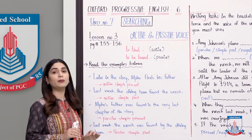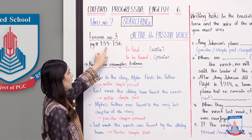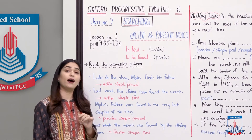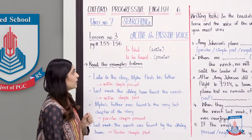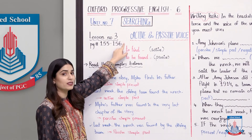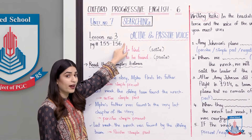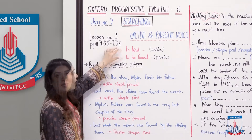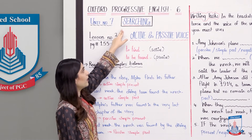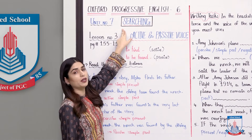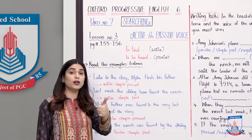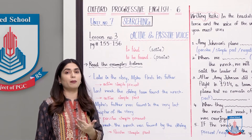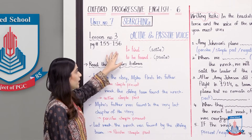Today, lesson number 3 covers pages 155 to 156. These two pages are the same content. Our topic is active and passive voice. We will look at, search, find, and investigate these verbs, and discuss the same words in active and passive forms.